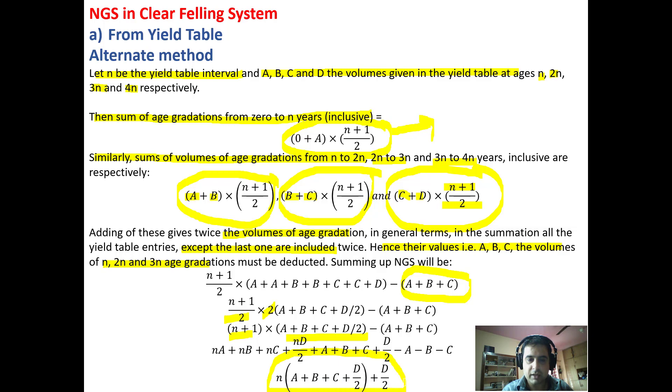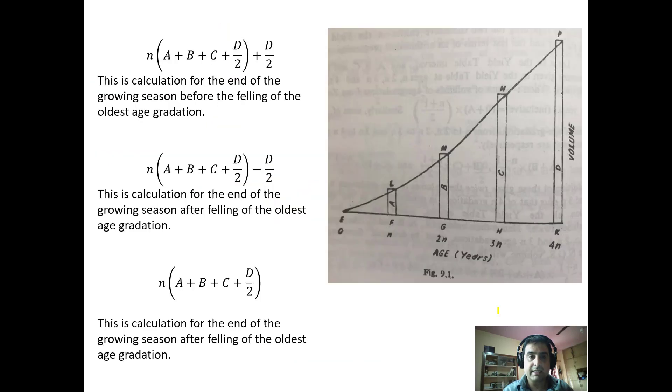This is the growing stock at the end of the growing season before the final crop in the mature age class is felled. Now if we want to remove this volume as yield, we have to subtract it with D. Once we subtract this with D, we are left with this term, which is the growing stock after the felling of the oldest gradation.